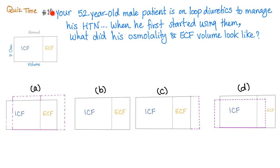Question of the day — this is the 10th question; previous nine are in prior videos in this series. A 52-year-old male patient uses loop diuretics to manage his hypertension. When he first started using them, what would you expect his osmolality and ECF volume to look like? Pause and let me know your answers in the comments. The answer will be in the next video. Please subscribe — see you soon.